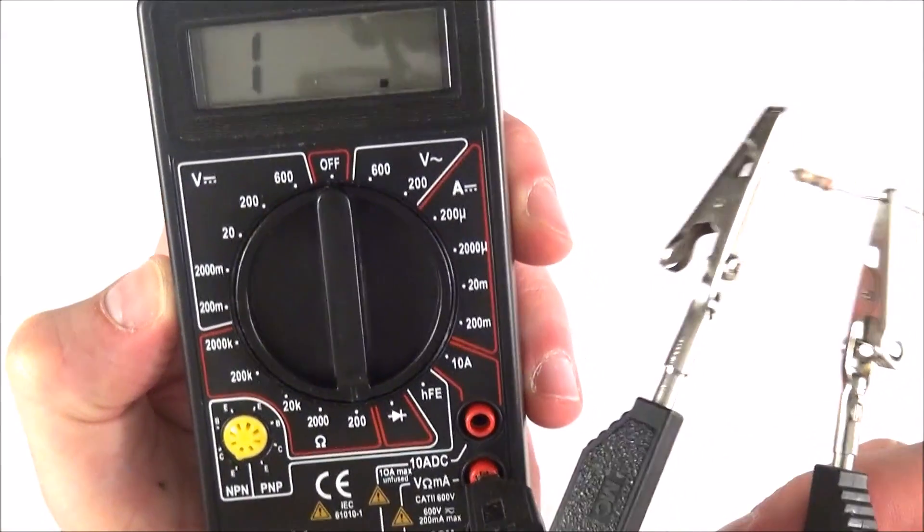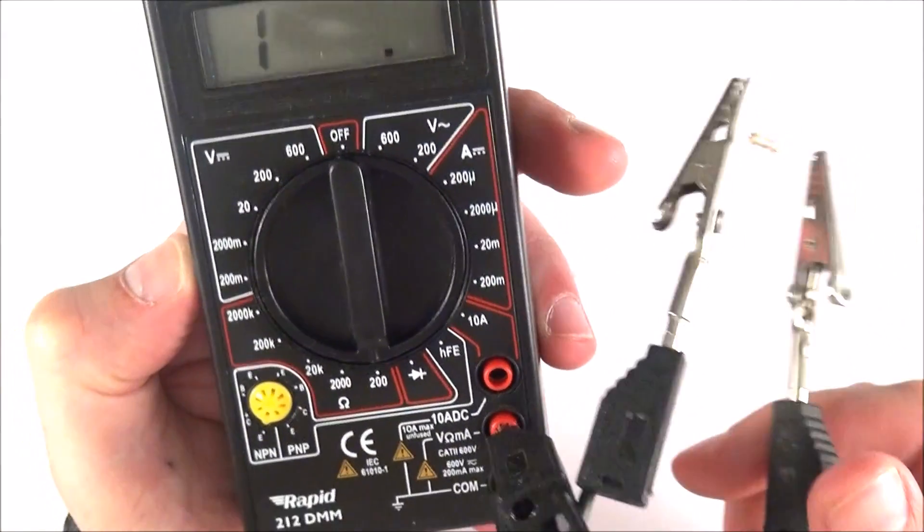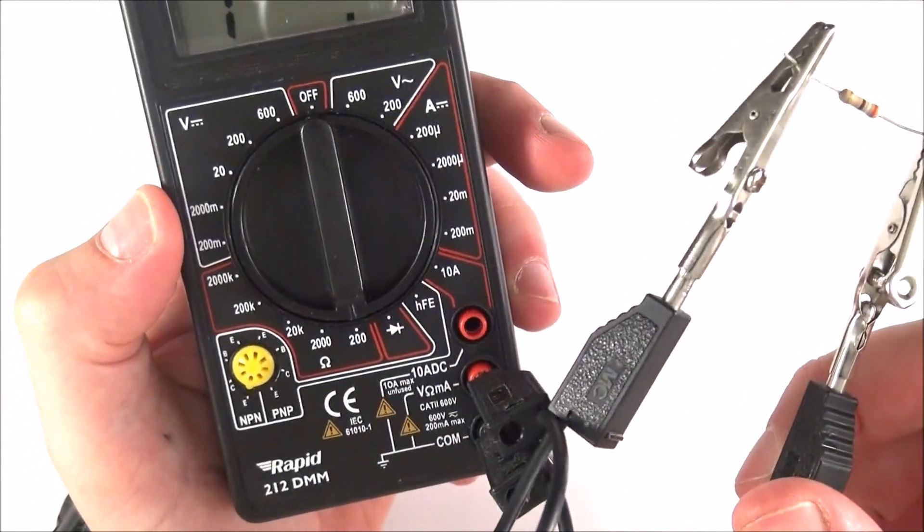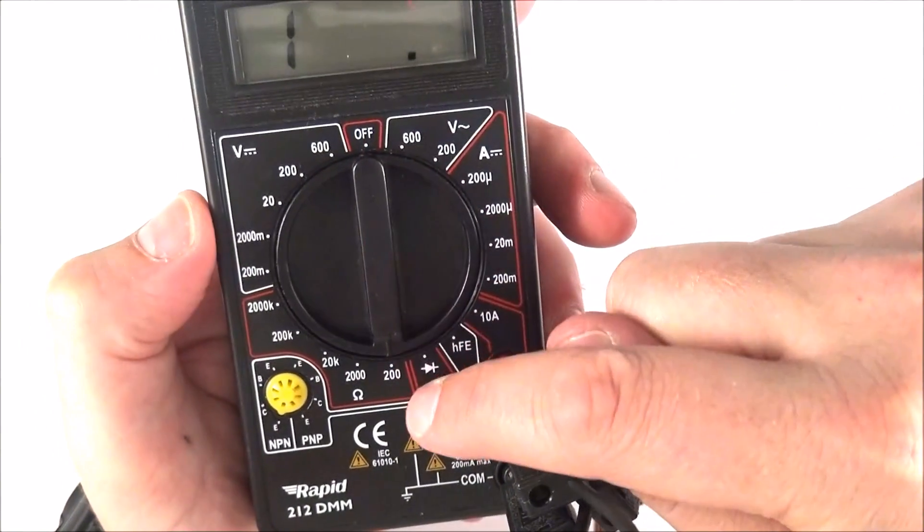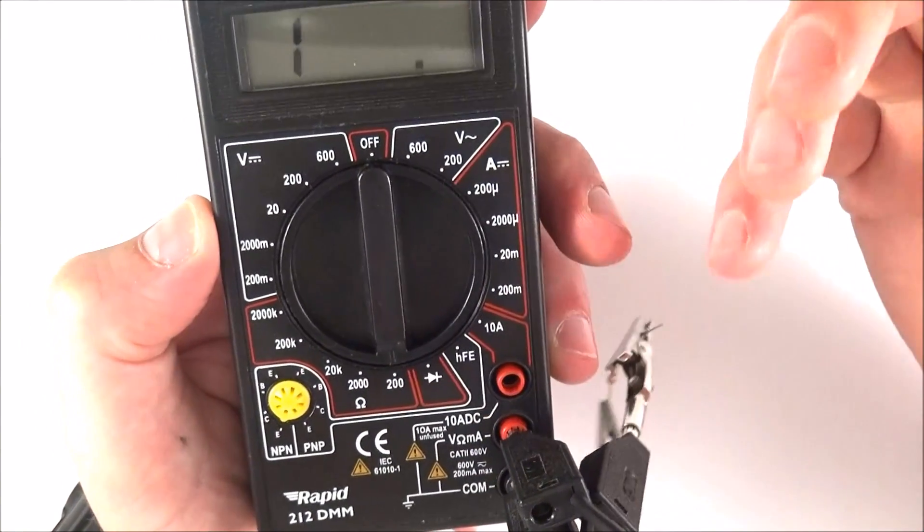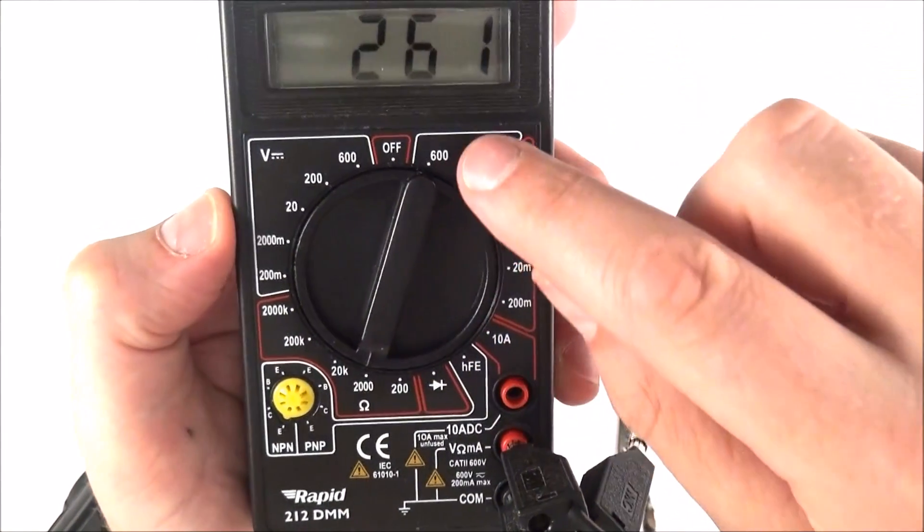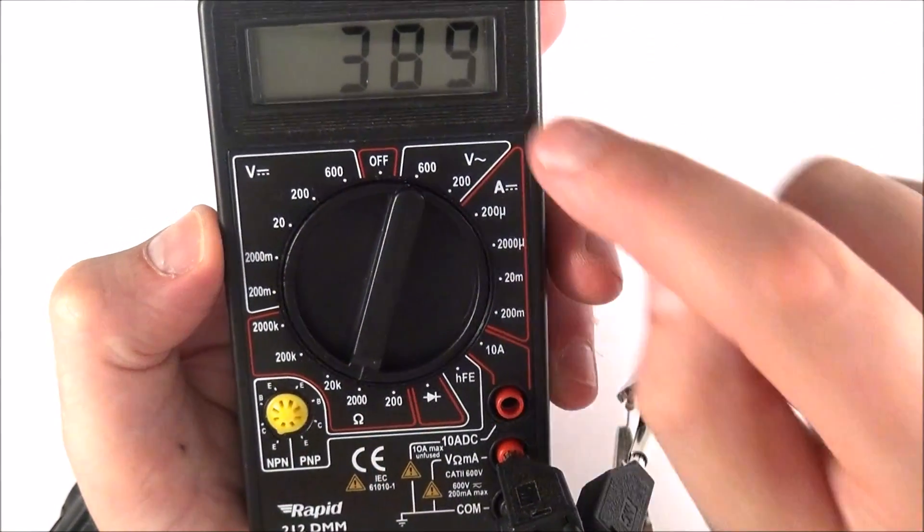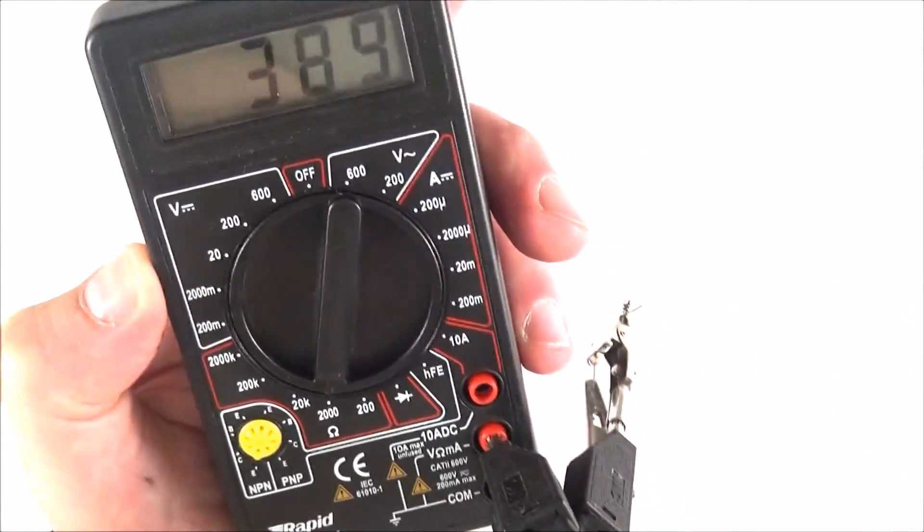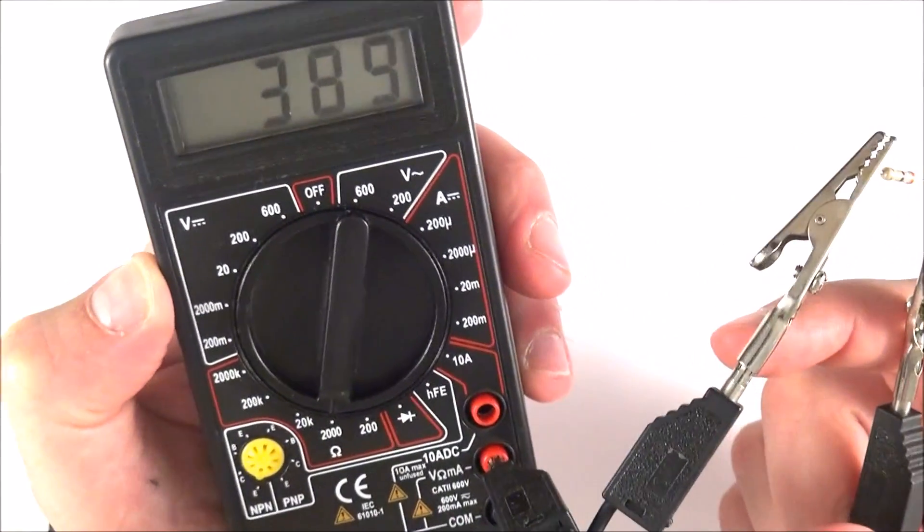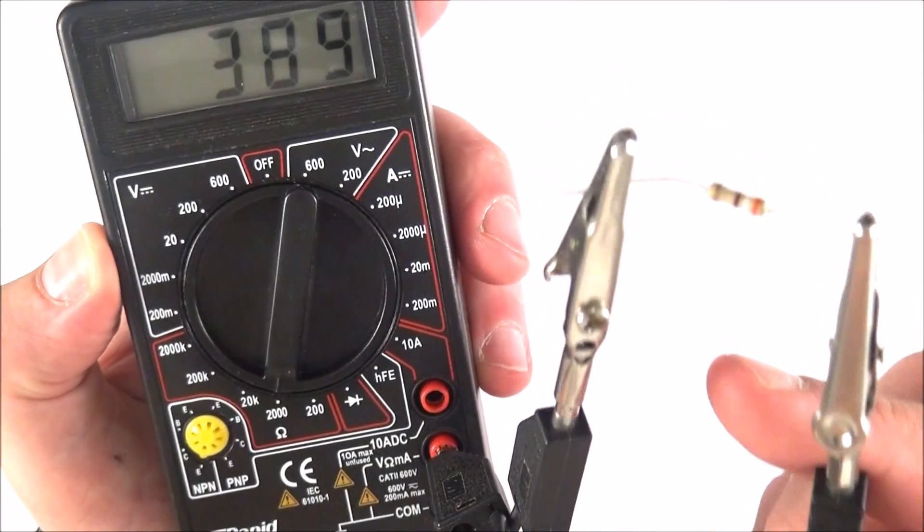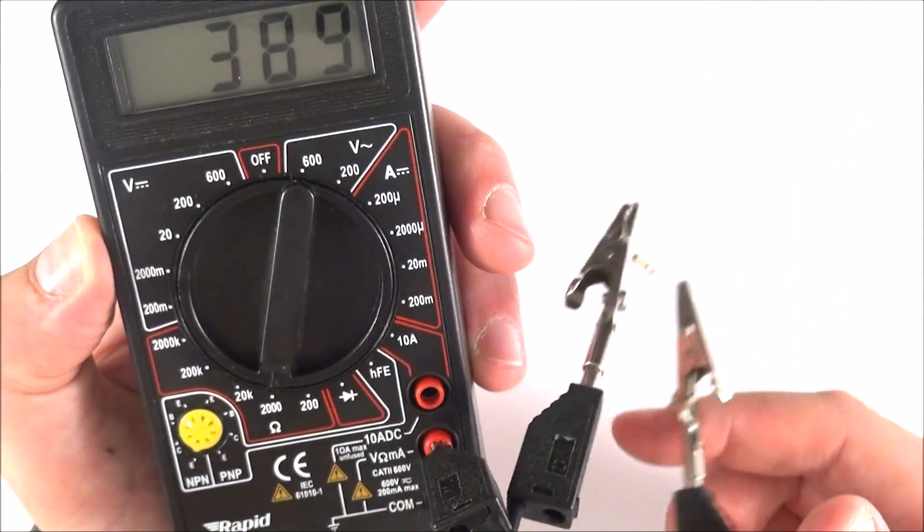It says at the moment one point something, and that means that the resistance of this component is greater than 200 ohms. You know, resistances tend to be quite big numbers. So what we can then do, we can let go, we can turn the dial, and this now goes up to a maximum of 2000 ohms. And indeed it gives us a value of 389, so this resistor has a value of 389 ohms. And this is an appropriate figure.